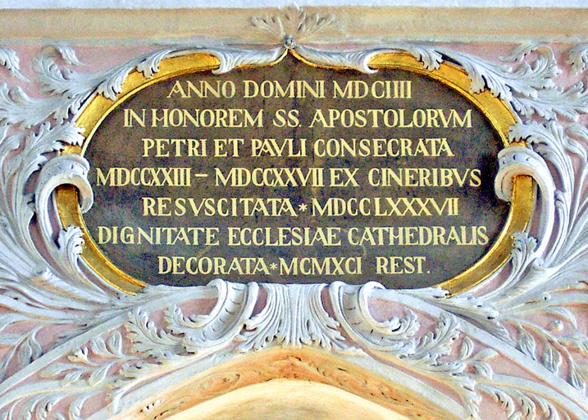The terms Anno Domini and Before Christ are used to label or number years in the Julian and Gregorian calendars. The term Anno Domini is medieval Latin and means 'in the year of the Lord,' but is often presented using 'our Lord' instead, taken from the full original phrase Anno Domini Nostri Jesu Christi, which translates to 'In the year of our Lord Jesus Christ.'